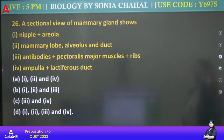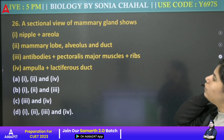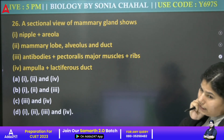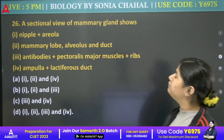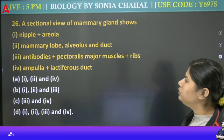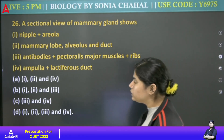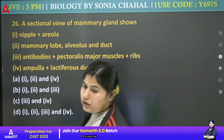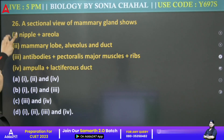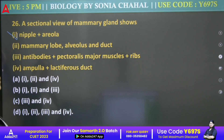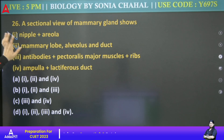If we take a sectional view of a mammary gland, we would see: nipple plus areola, mammary lobe, alveoli and ducts.